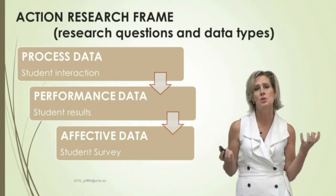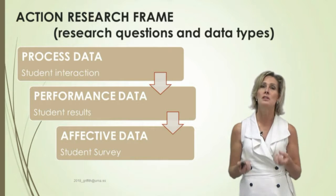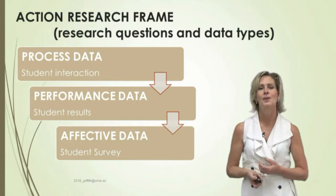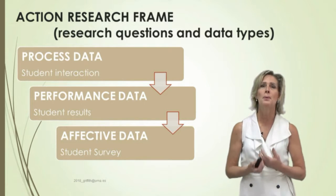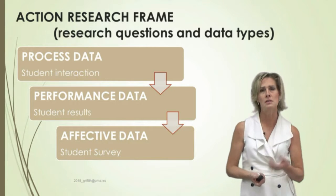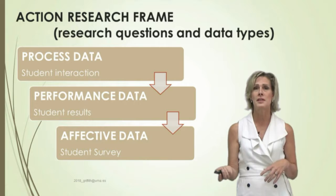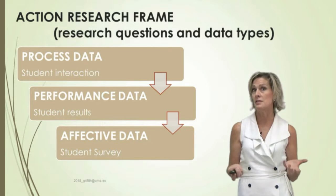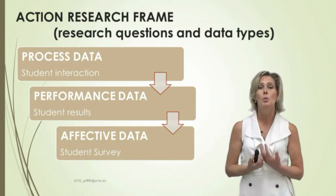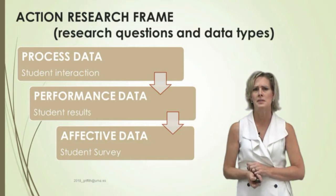This action research frame begins with research questions and data types. Our first research question gives us student interaction: will Spanish students interact in English with their Spanish professors? The next data type will compare student results with students taught in the first language and students taught in the second language across 18 subjects. And the last data type will give us affective data from a student survey — what they feel about the overall experience.